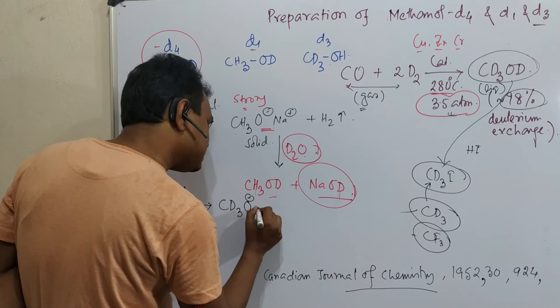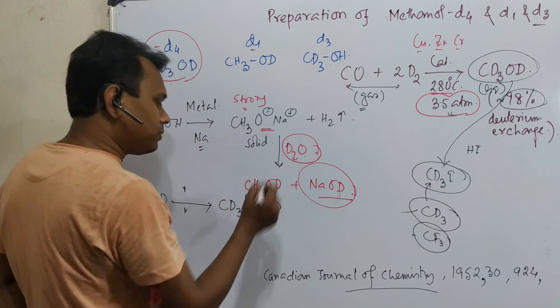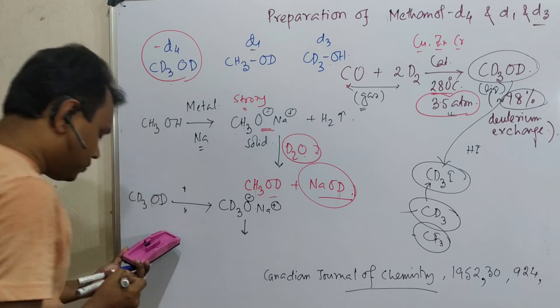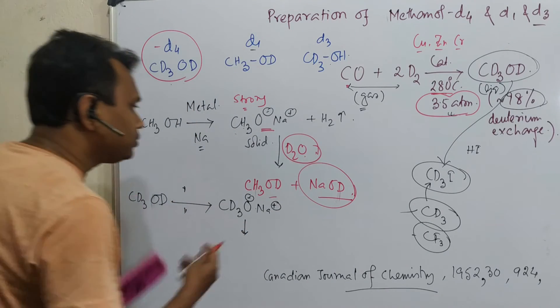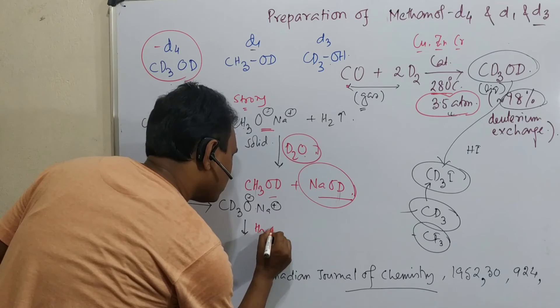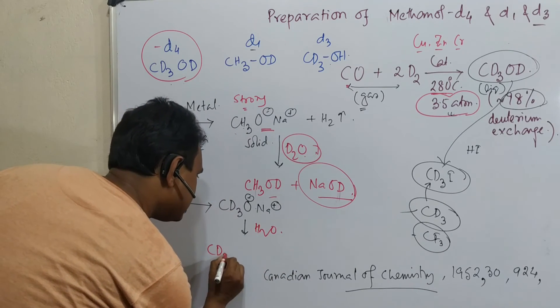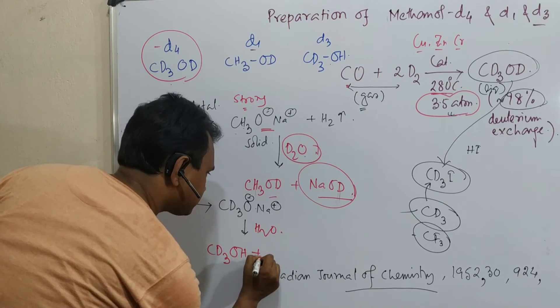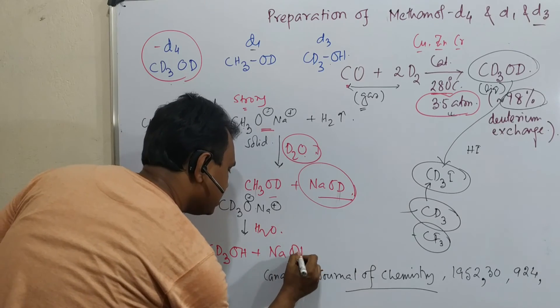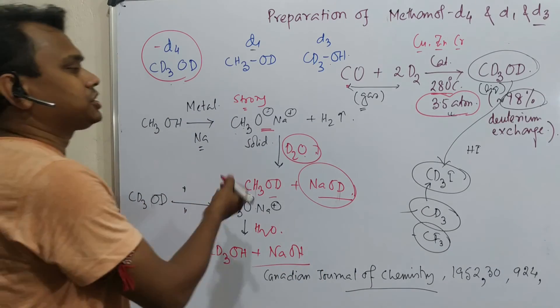CD3O minus Na plus. And in this case, instead of D2O, you should pour what? You should pour H2O. Then what it will produce? CD3OH plus NaOH. So in this way, through fractional distillation, you can separate.